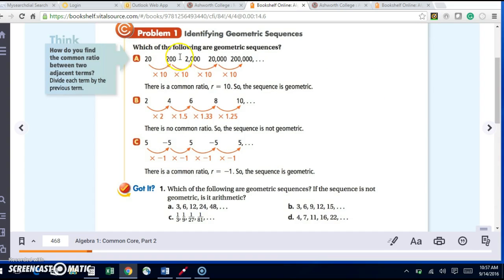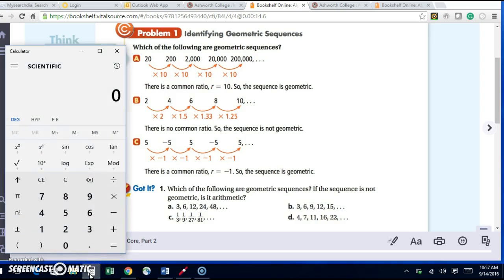So let's look at problem 1. It says, which of the following are geometric sequences? So we have 20, 200, 2000, 20,000, and 200,000.